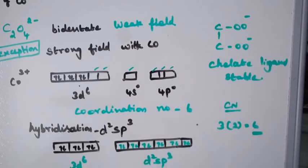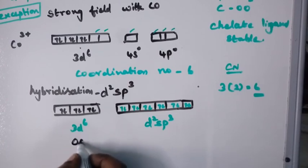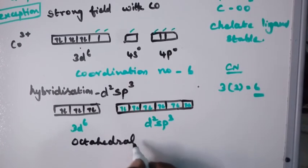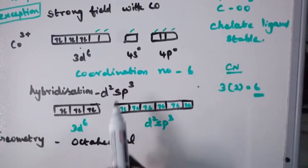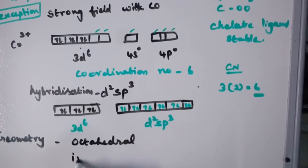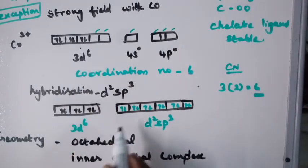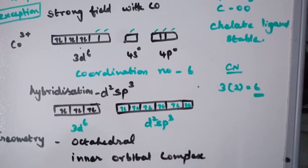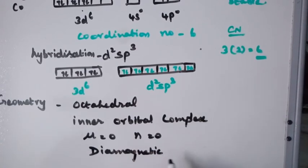The d²sp³ hybridization gives an octahedral geometry to the complex. Since the inner 3d orbitals are involved in hybridization, it is an inner orbital complex. There are no unpaired electrons, so n = 0, μ = 0, and the complex is diamagnetic in nature.